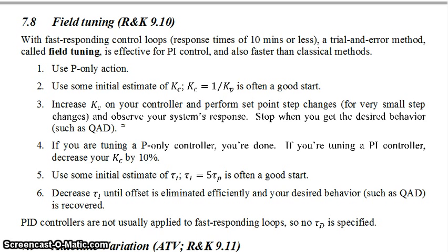Now if you're using a PI controller, what you'll want to do is tune your tau_I. So now you'll switch to proportional integral control. To do that, first you decrease your K_C by 10%. Then you use some initial estimate of tau_I. Tau_I equaling 5 times the process time constant is often a good start as your initial estimate.